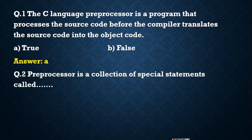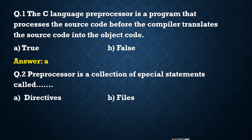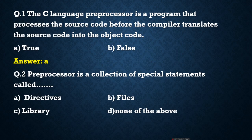Question 2: A pre-processor is a collection of special statements called — options are: A) directives, B) file, C) library, and D) none of the above. The correct answer is A, directives. A pre-processor is a collection of special statements called directives.